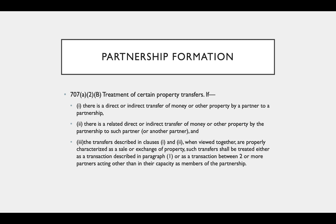Section 707(a)(2)(B) applies to property. If there's a direct or indirect transfer of money or other property by a partner to a partnership, there is a related direct or indirect transfer of money or other property by the partnership to the partner, and the transfers when viewed together are properly characterized as a sale or exchange of property, such transfers shall be treated as a taxable transaction between the partnership and a partner acting other than in their capacity as a member of the partnership.